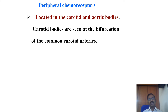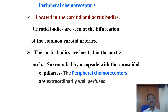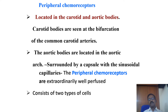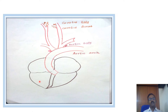Peripheral chemoreceptors are located in the carotid and aortic bodies. Carotid bodies are seen at the bifurcation of the common carotid arteries. The aortic bodies are located in the aortic arch, surrounded by a capsule with sinusoidal capillaries. The peripheral chemoreceptors are extraordinarily well perfused with high blood supply. This diagram depicts the carotid body at the bifurcation of the common carotid artery and the aortic body at the arch of aorta. Impulses from the carotid body are carried through the glossopharyngeal nerve, and from the aortic body through the vagus nerve.